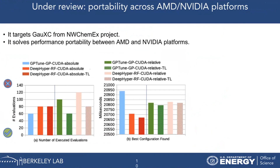In our next paper, which is still under review, we targeted a GPU-based Density Functional Theory application. You can see on the left that all the Transfer Learning variants — shown with the hatched area — took fewer evaluations to find the optimal configuration. And on the right, you can see that the optimal configurations found by the Transfer Learning variants were also faster than those found by the fresh Bayesian optimization search.